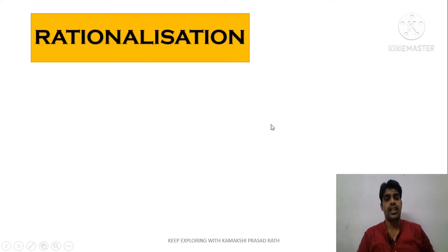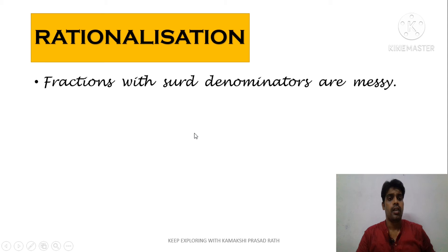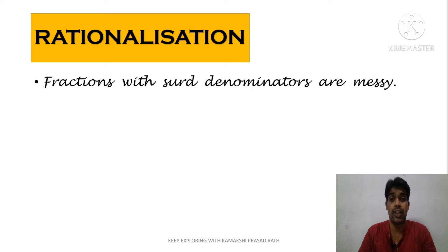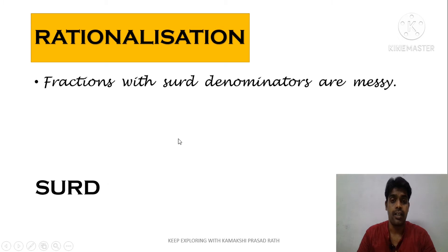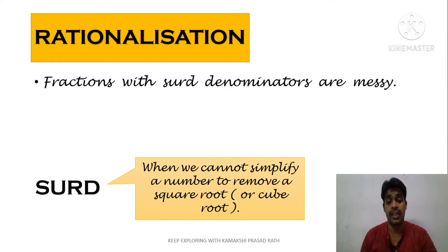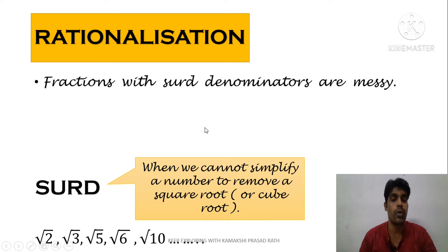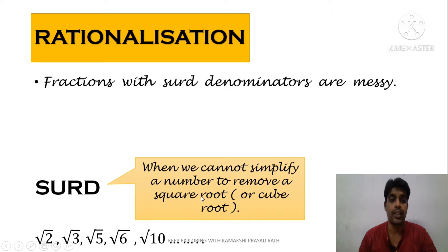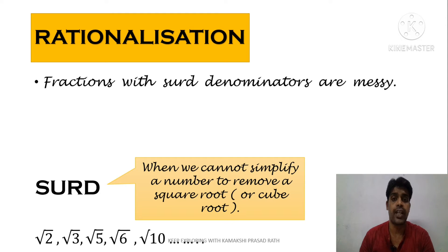Now, rationalization. In rationalization, we get some fractions with surd denominators which makes the calculations complicated. So what is a surd? Surds are nothing but square roots or cube roots which we are not able to simplify. For example, root 2, root 3, root 5, root 6, and root 10 — these are all called surds because we cannot simplify them.